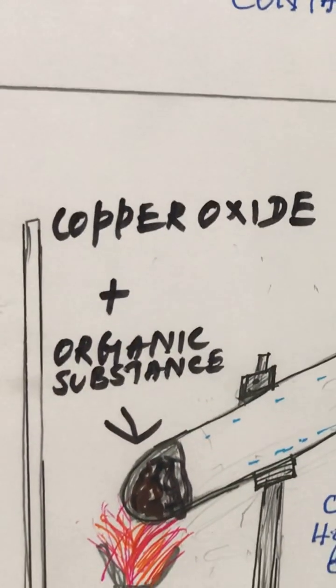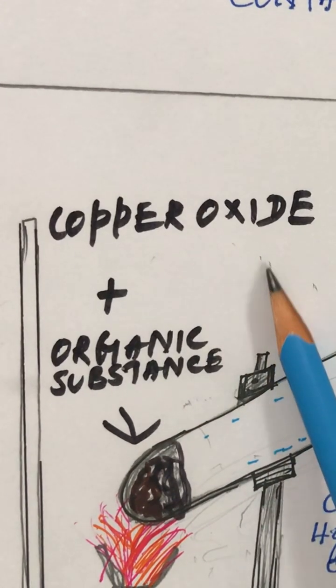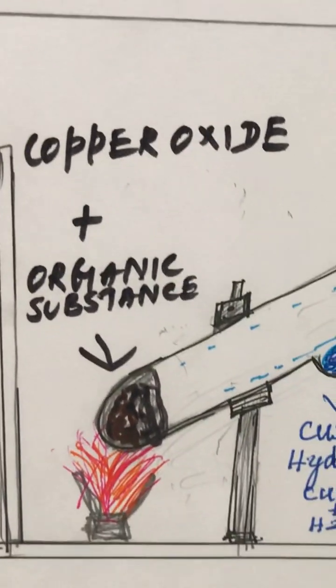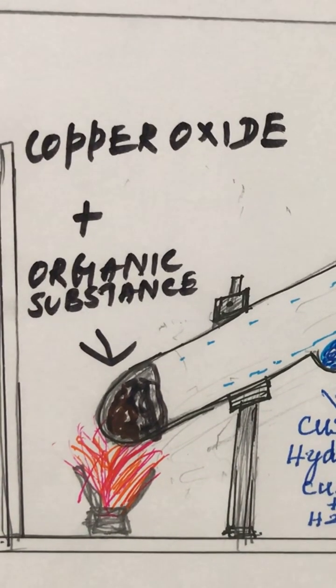In a bent delivery tube, the organic substance to be detected is heated with copper oxide. The delivery tube is connected with lime water.